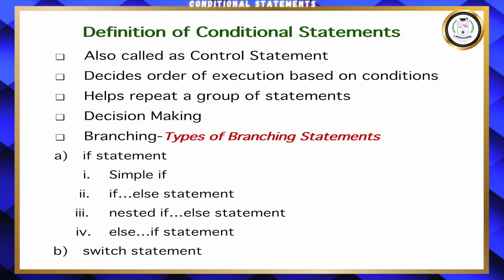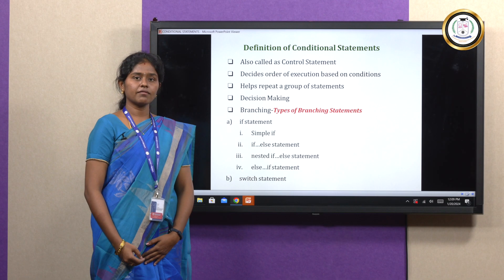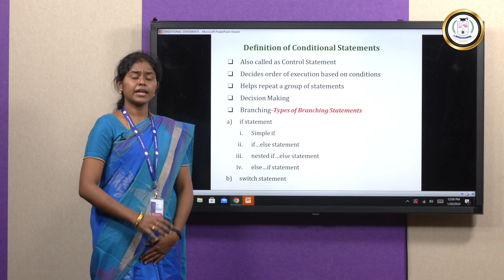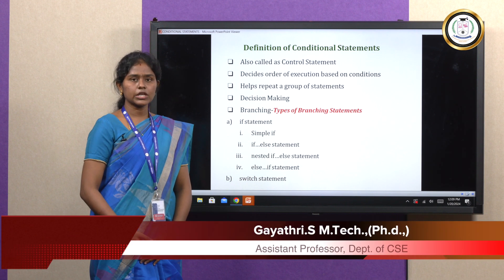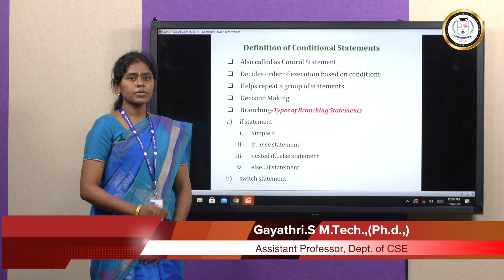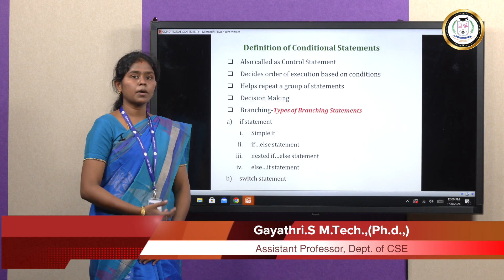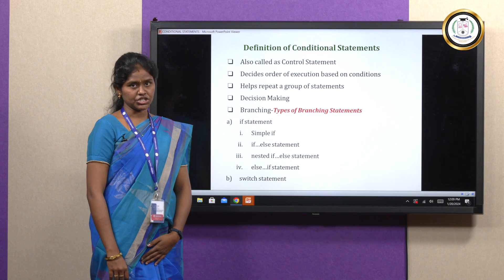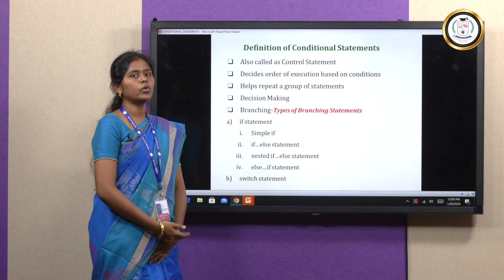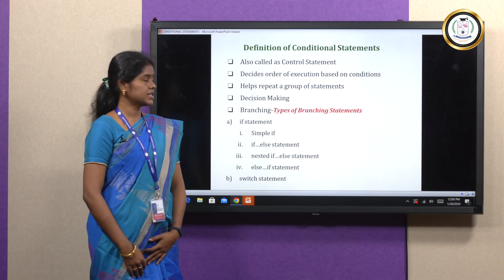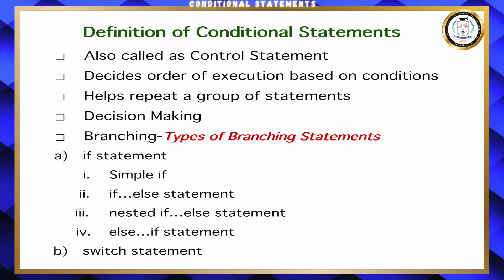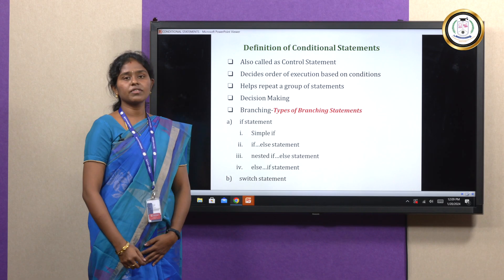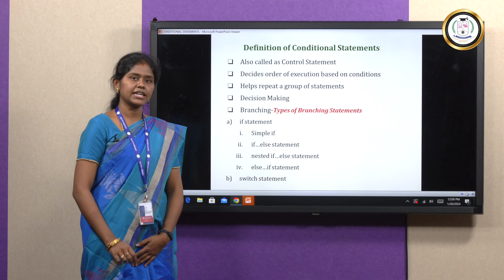First we will see the basic definition of conditional statements. Why do we use conditional statements? In a program, if we want to execute only a particular part of the statements or operations — only if a condition is satisfied — we use the concept called conditional statements. Another name is control statements. It decides the order of execution based on conditions in a program.